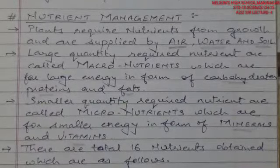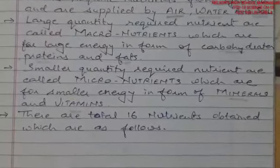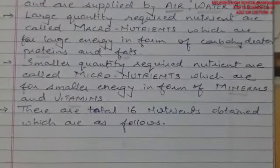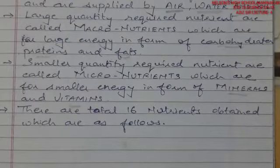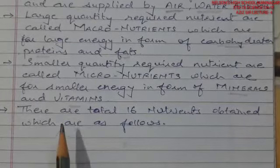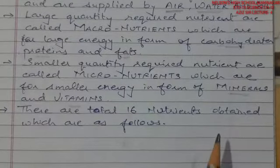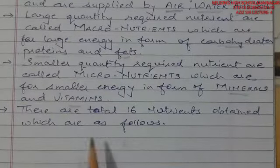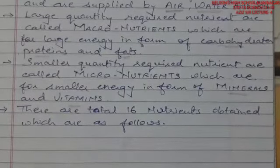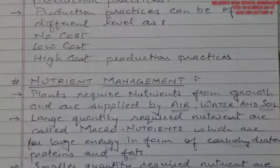Minerals and vitamins are micronutrients, meaning they are required in lesser amounts. There are a total of 16 nutrients obtained from these sources.